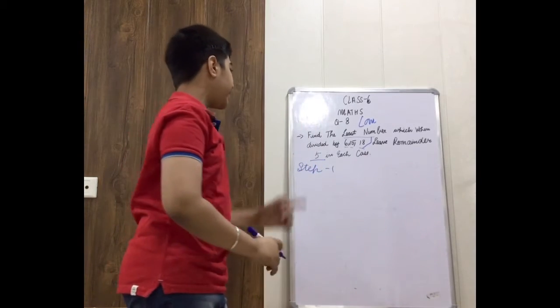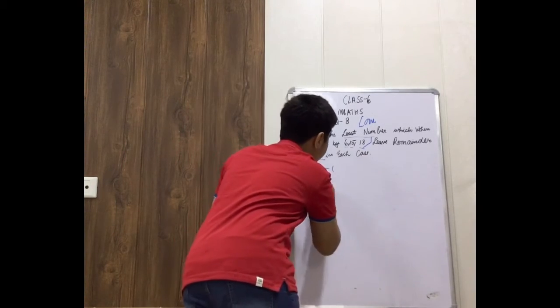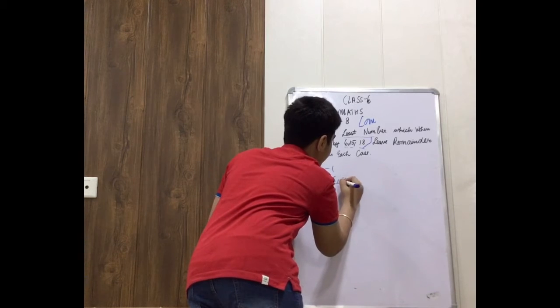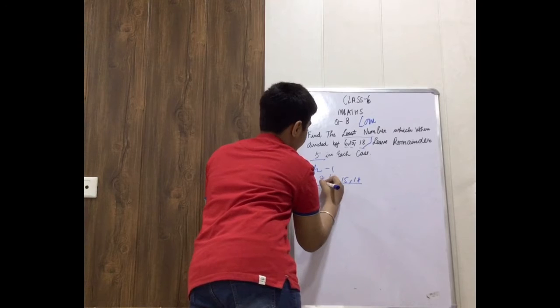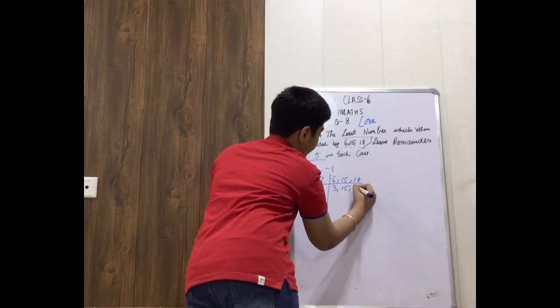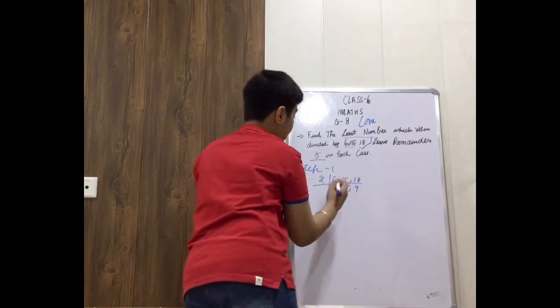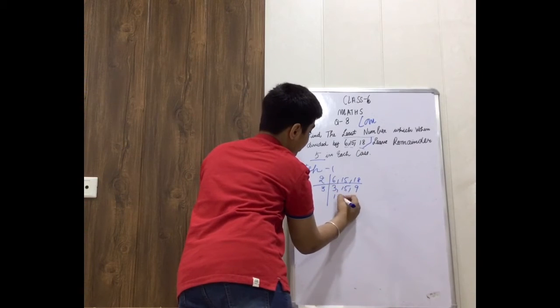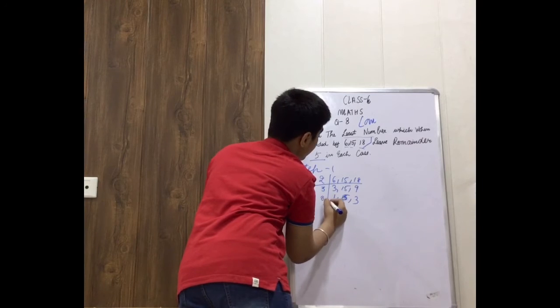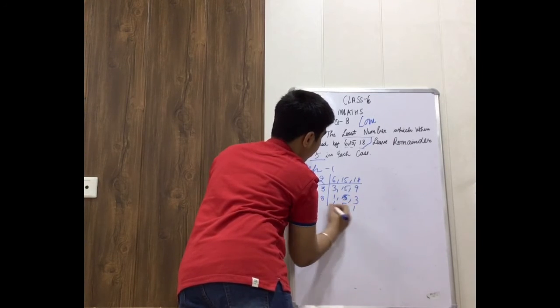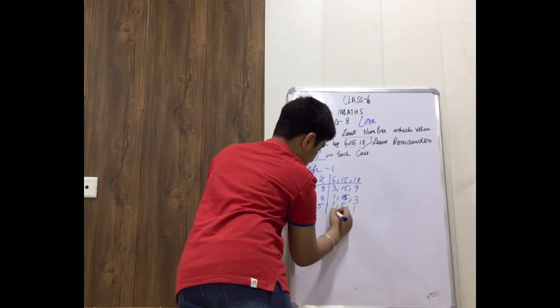So when I am going to find the LCM over here, let's go with 2. We are getting 3, 15, 9. Now we will go with 3. We get 1, 5, 3. Again we will go with 3: 1, 5, 1. We will go with 5: 1, 1, and 1.